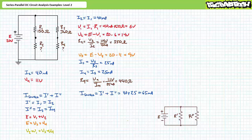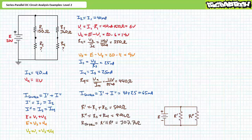As a means of checking our work, the series parallel circuit can be thought of as R single prime — the series combination of R1 and R2, 500 ohms — in parallel with R double prime — the series combination of R3 and R4, 800 ohms. The total resistance seen by the source is R single prime in parallel with R double prime, yielding a total resistance of 307.7 ohms. Source current equals supply voltage over total resistance, which similarly demonstrates that source current is 65 milliamps. I've got a reasonable degree of confidence our answers are correct and we can move on to the next illustrated example.